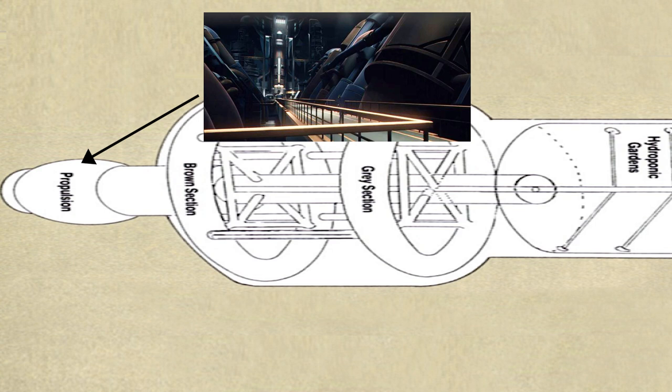In the recent Babylon 5 movie, The Road Home, they showed a different reality that had some kind of gravity system in the yellow sector which is an interesting difference between both of these stations.